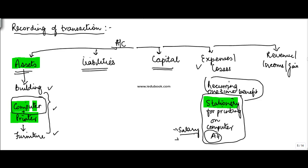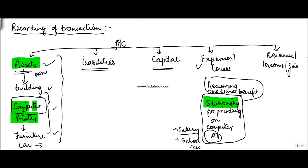For example, you pay a salary every month, or from your perspective, school fees paid every month — those are expenses. But if you buy a car to go to school, that's an asset — you buy it once and keep using it for a long duration of time. So an asset is something owned by the company and used for a long duration of time.